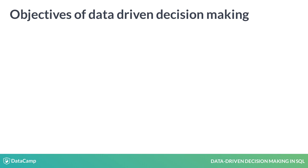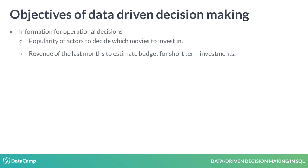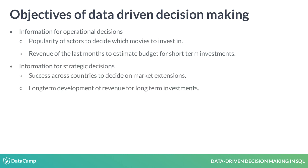Data-driven decision making achieves short-term and long-term goals. We can extract valuable information from the data to support operational short-term decisions. For example, the popularity of certain actors helps MovieNow decide whether to purchase certain movies. Also, last month's revenue can be important information supporting decisions regarding short-term investments. For long-term decisions, data-driven support can provide information regarding customer growth and successes in certain regions in the past, which can inform company decisions regarding when and where the market can be expanded in the future.